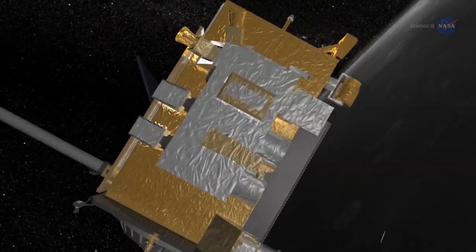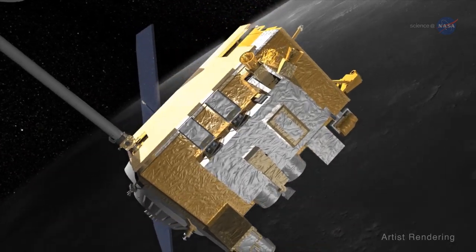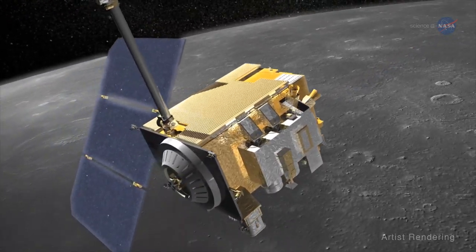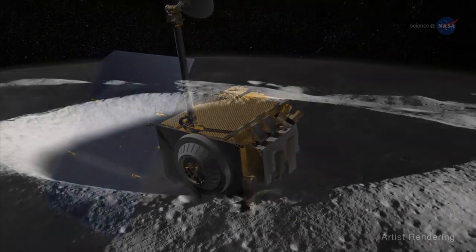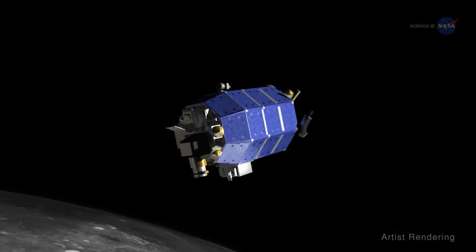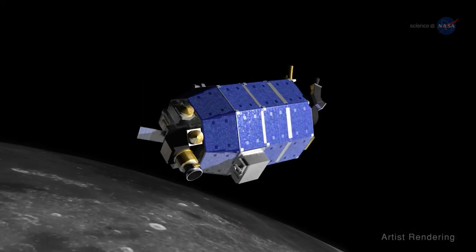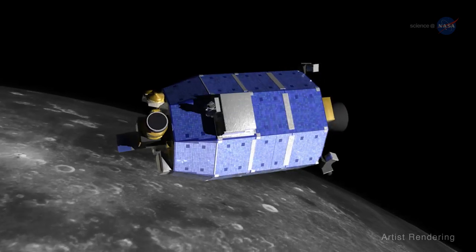In the ten years since the LCROSS mission, we have continued to study water at the lunar poles from orbit with instruments on several missions. But we still have lots of questions. Where, for instance, did the water come from?